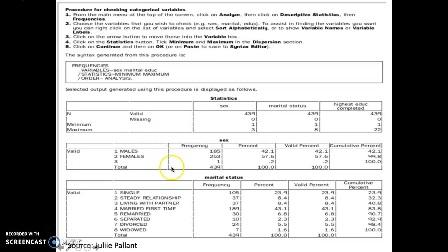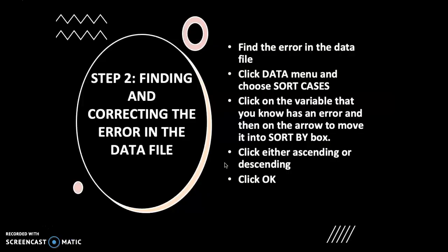So beside that, let's look at the frequency for sex. Male, 185. Female, 253. But suddenly the value of three, we keyed in one. So we need to delete this value. So how do we do that? We move on to step two.